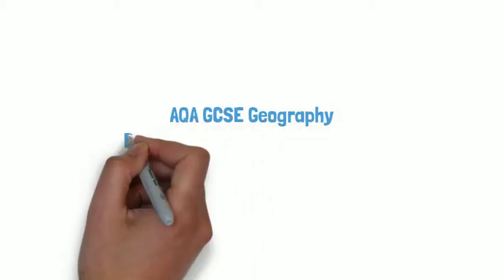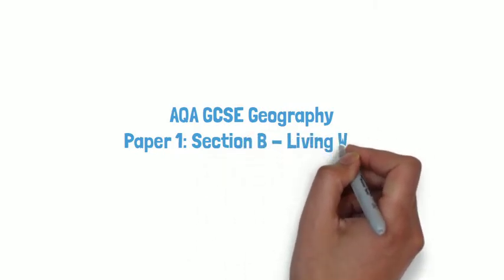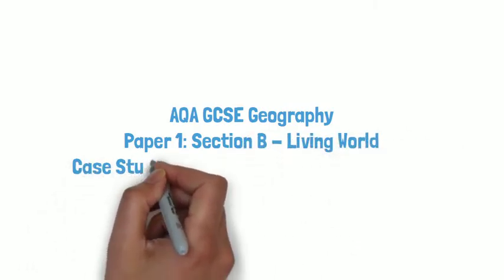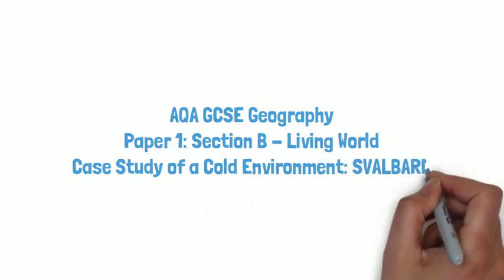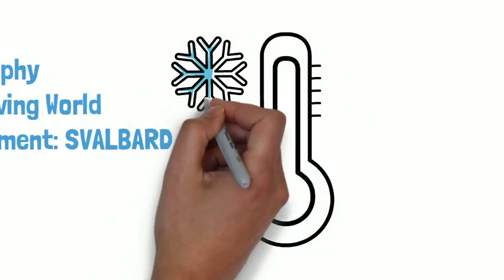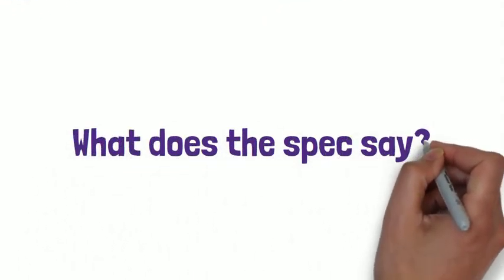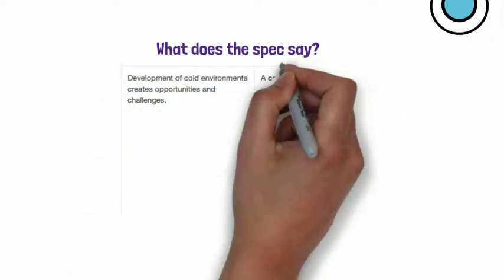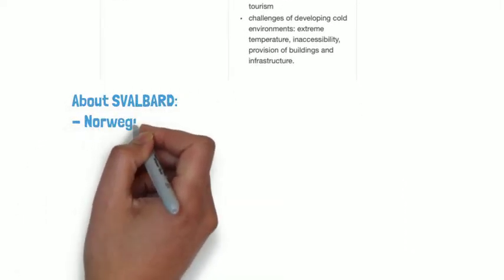This is a revision video for AQA GCSE Geography, Paper 1, Section B, Living World. In this case study we're looking at a cold environment — specifically Svalbard. We're looking at the case study of a cold environment and examining the development opportunities and challenges within that place.